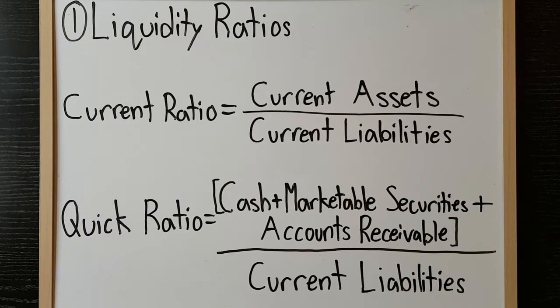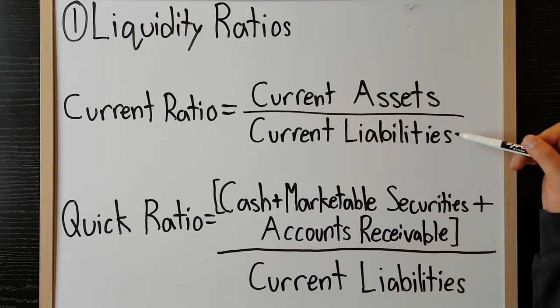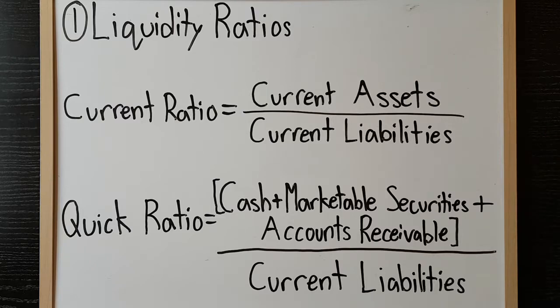Liquidity ratios measure a company's ability to meet its day-to-day short-term obligations and costs. The current ratio, or current assets over current liabilities, measures the short-term debt-paying capacity of the company.